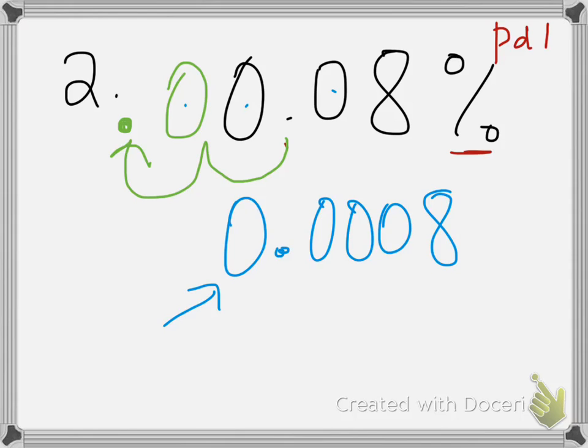Actually, the correct answer is 0.0008 — you should have three zeros there, not including the leading zero.